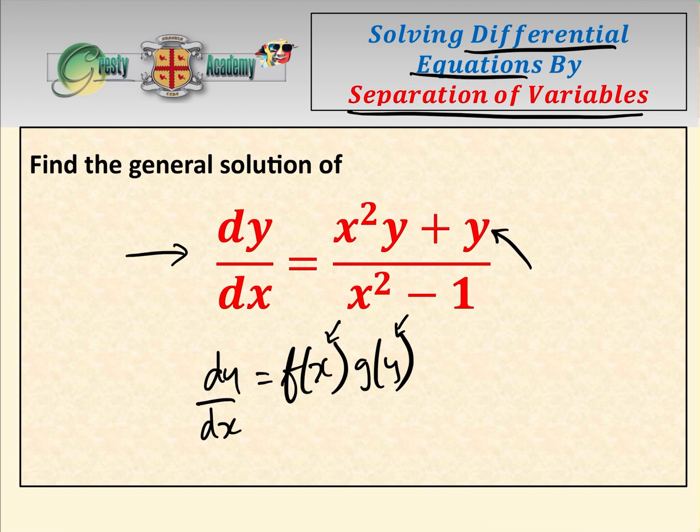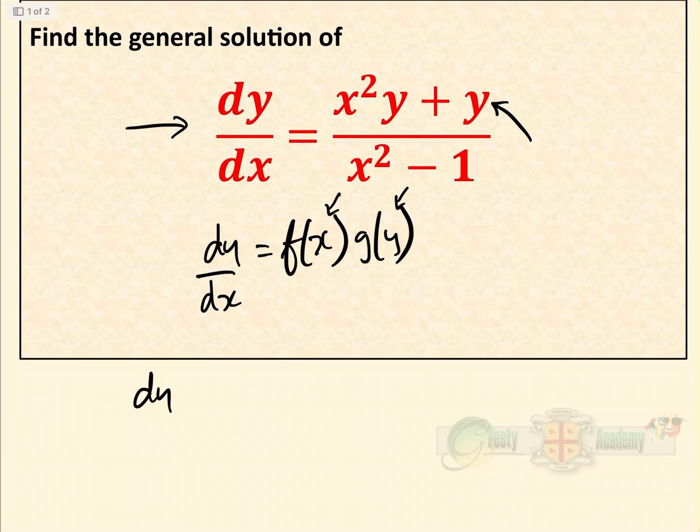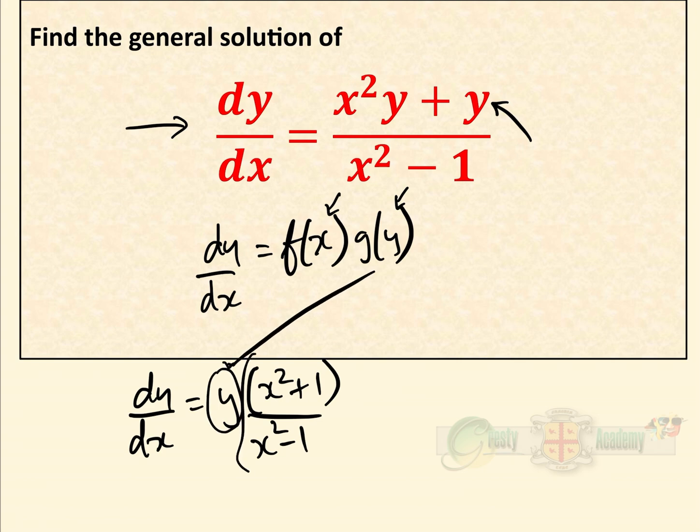We can take y out of this as a factor, leaving us with dy/dx equals y times (x² + 1)/(x² - 1). Here we have our g(y) and here we have our f(x), so we can separate them.